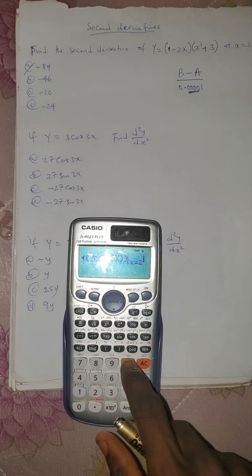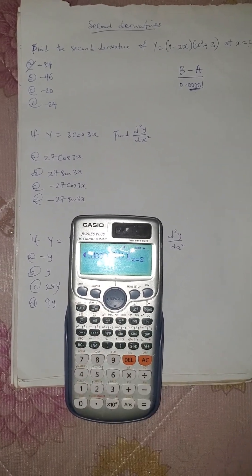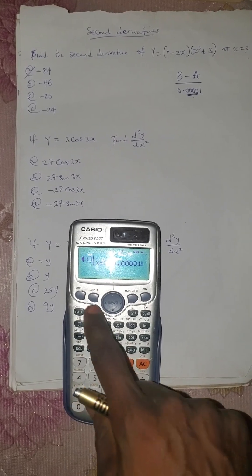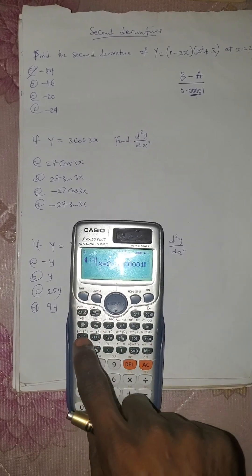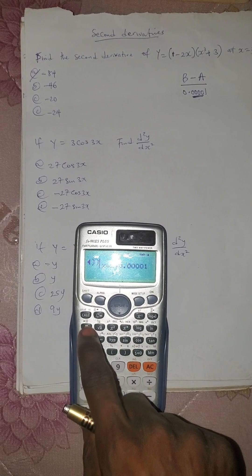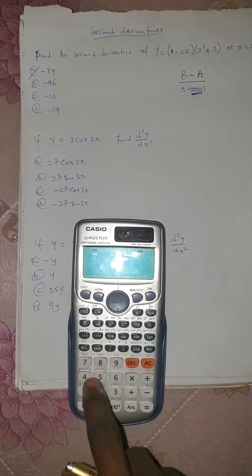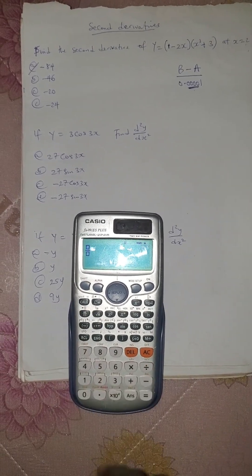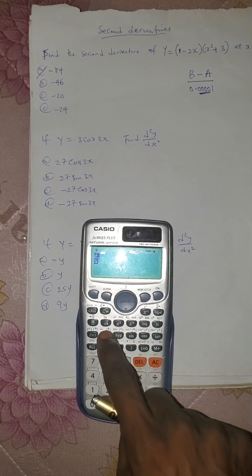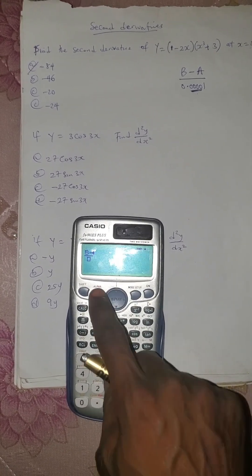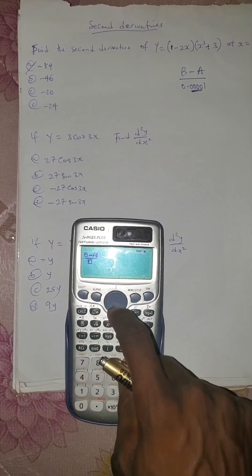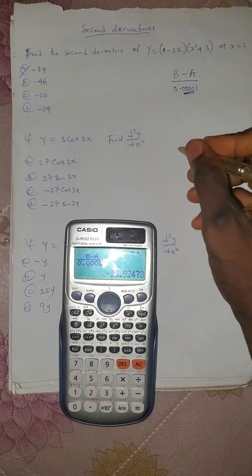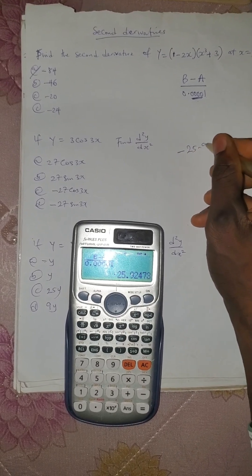Press backward direction, press delete, then come to the back of the x value 2 and add the constant to it: 0.00001. Save this as B. When you save it as B, press AC. Press the formula: alpha B minus alpha A, over the constant 0.00001. Press equals — the answer is minus 25.92.